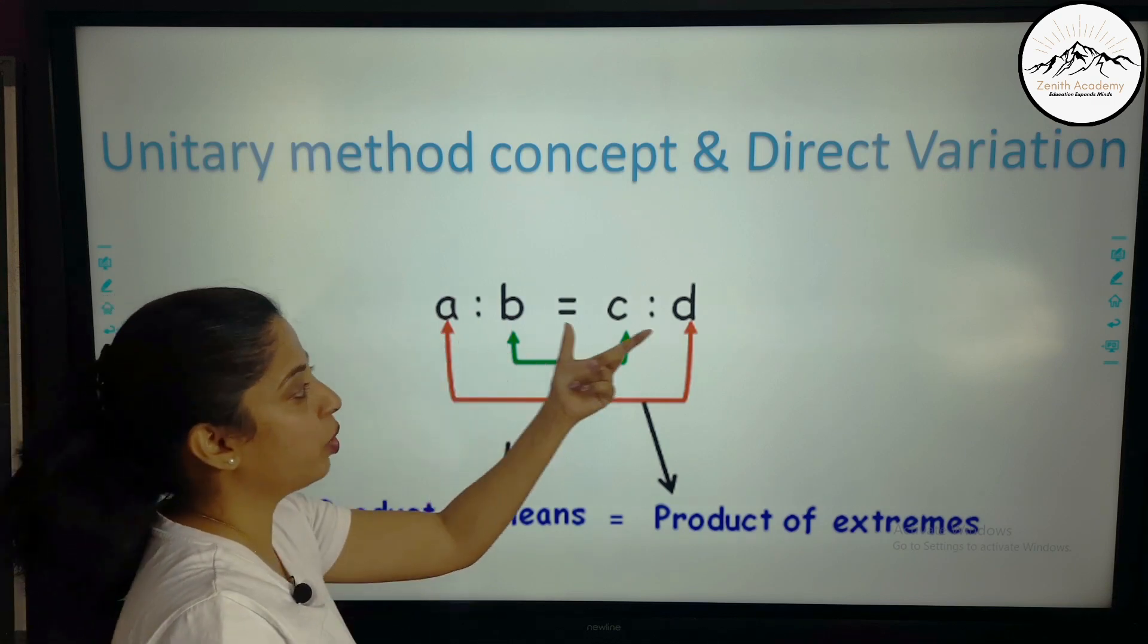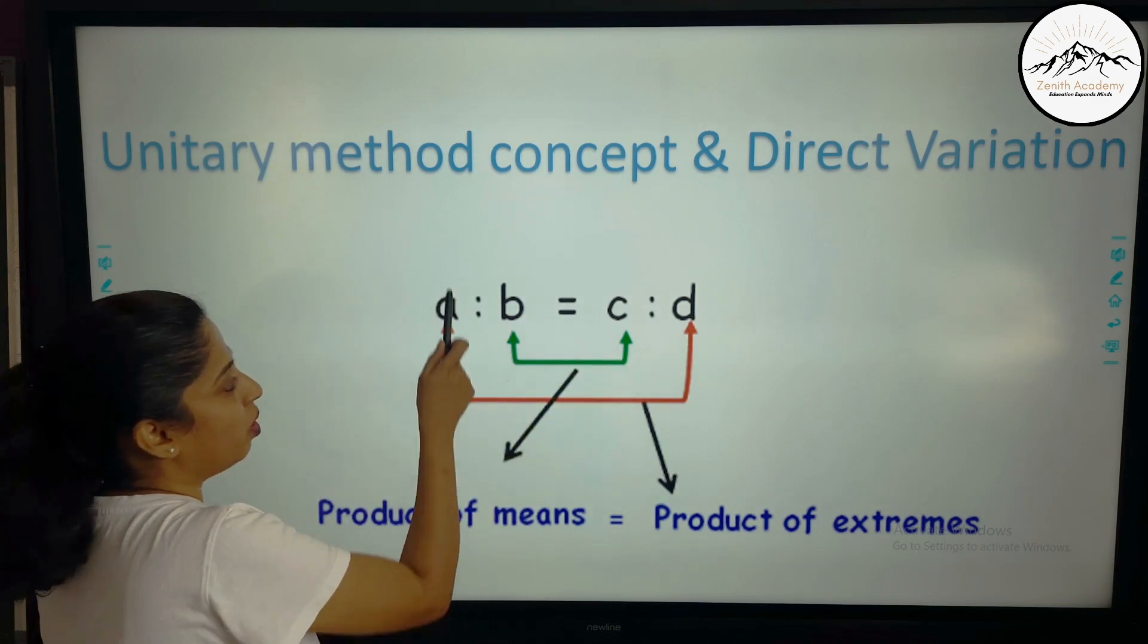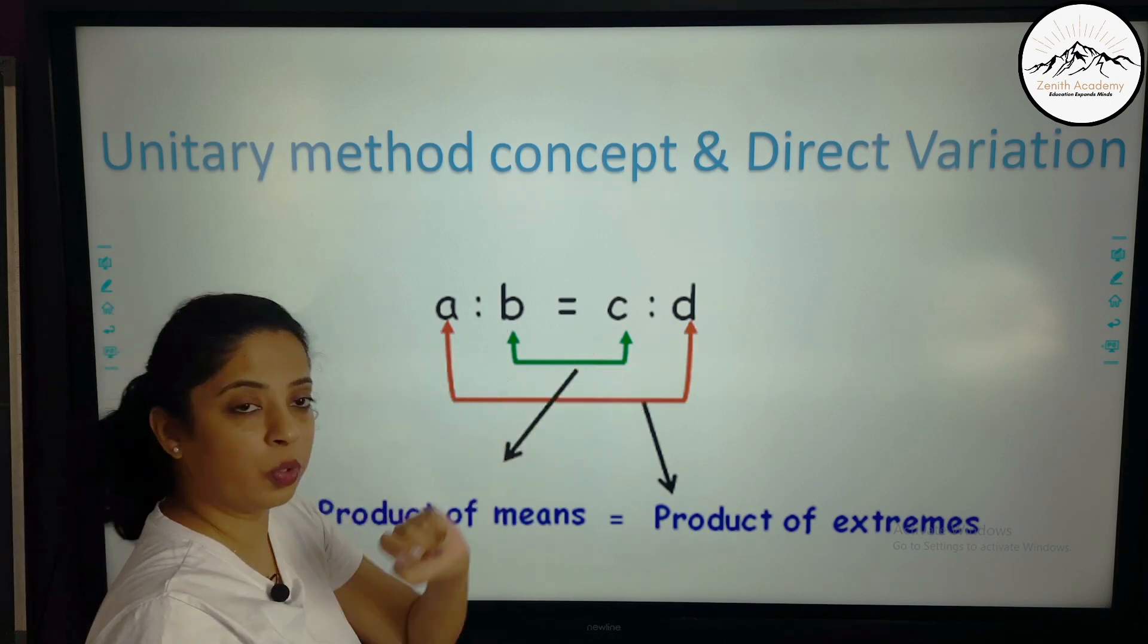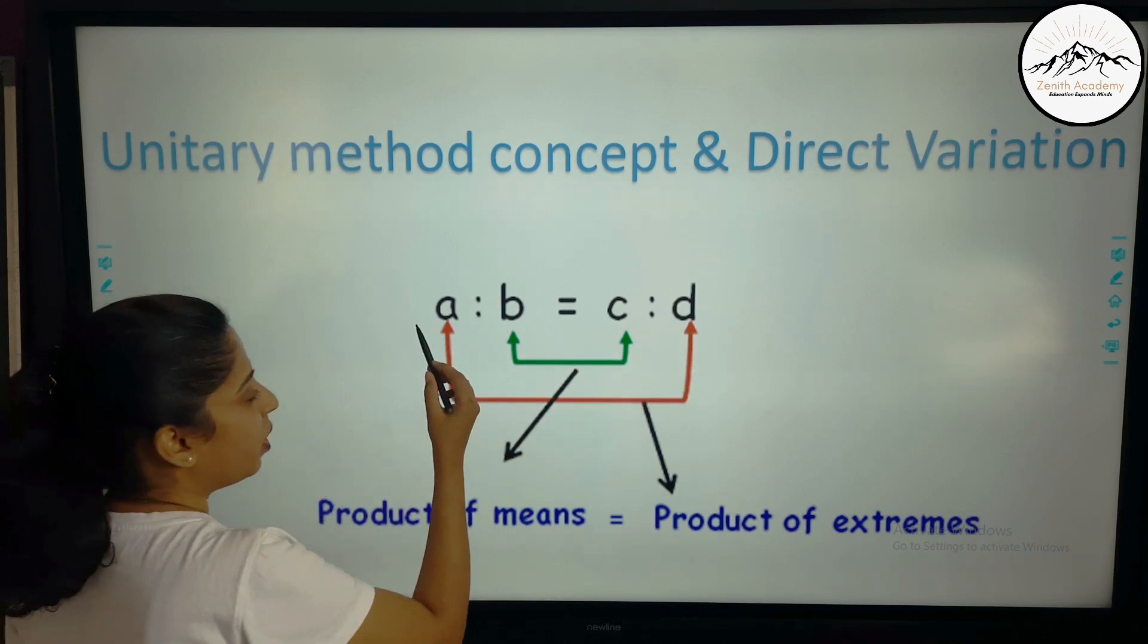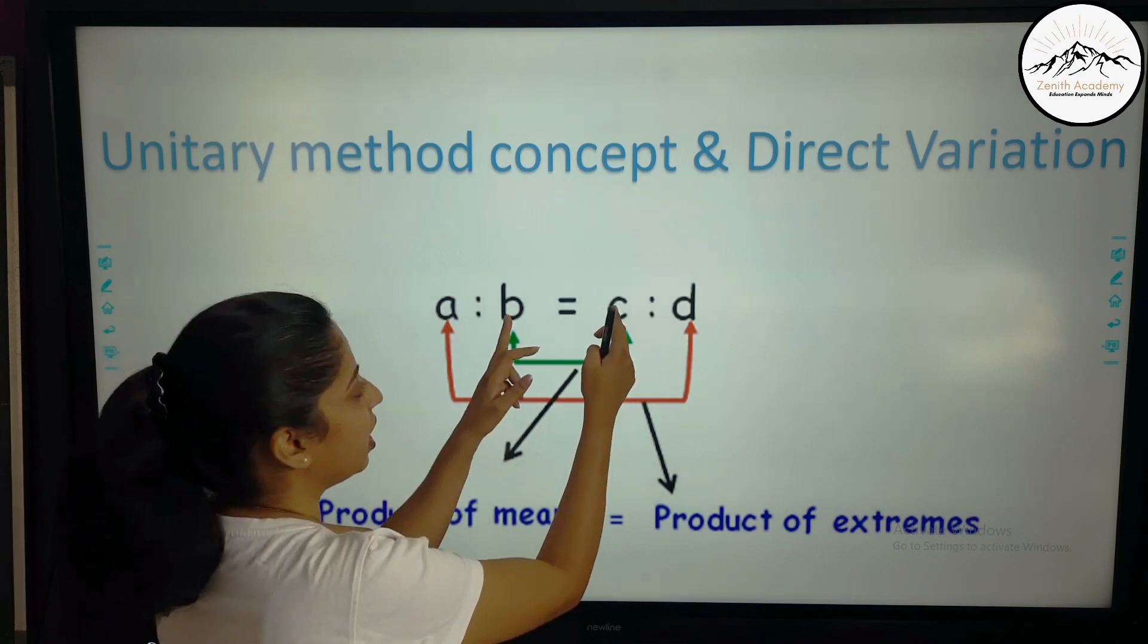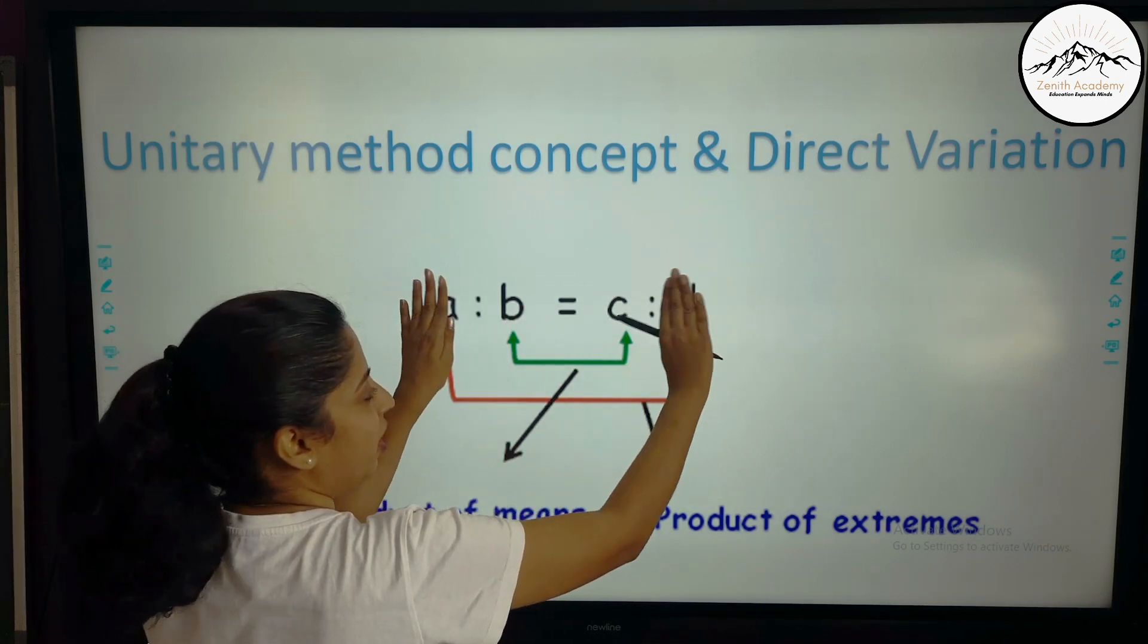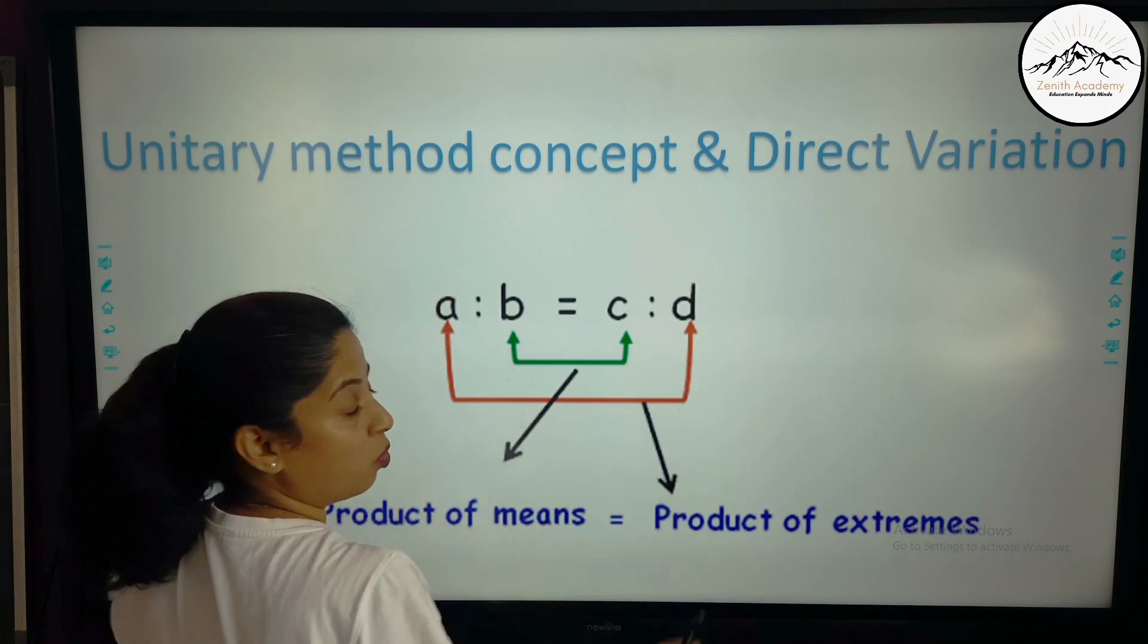Now see here, these are two ratios. The number of pens and the cost. So one ratio is equal to another ratio. So if we compare two ratios, the center values are known as mean and the external values, the outermost side values are known as extreme.